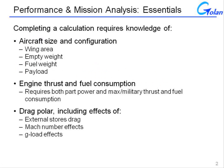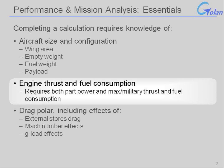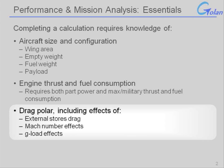In order to complete a performance calculation, there are three essential ingredients. First, you need to know some of the basic parameters about the aircraft's size and its configuration — things like wing area, empty weight, fuel weight, and payload. Second, you need to know the engine performance, including thrust and specific fuel consumption across a wide range of altitudes and thrust settings. And finally, the third thing you need is the drag polar, where you need to include the effects of storage drag, Mach number effects, and g-loading effects.